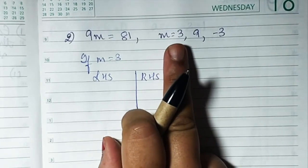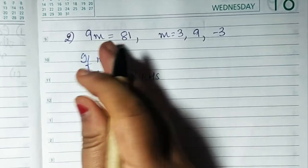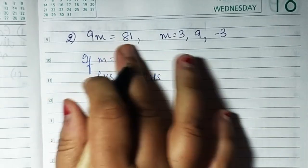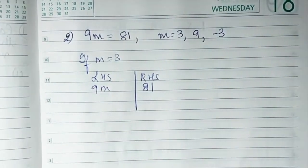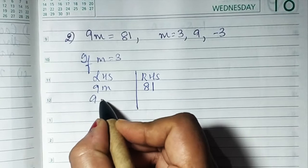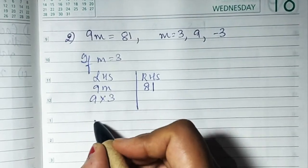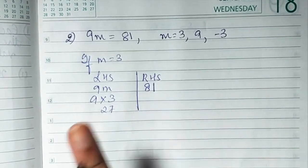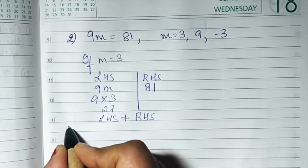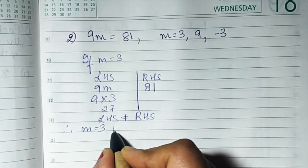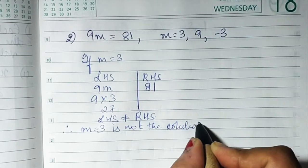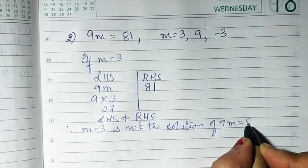Put the value of M = 3 into LHS: 9 × 3 = 27. RHS is 81. Since 27 ≠ 81, LHS is not equal to RHS. Therefore, M = 3 is not the solution of 9M = 81.